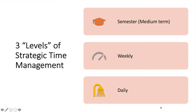Now we're going to move on to looking at three levels of strategic time management. We're going to divide the process into semester time management, weekly time management, and daily time management. Semester time management is where we look at the medium term — in academic life, things are divided into blocks of 12 to 13 weeks with a cycle of learning, classes, assignments, and exams. Next, we'll look at the weekly level, and finally, daily time management — how to manage tasks and to-do's.